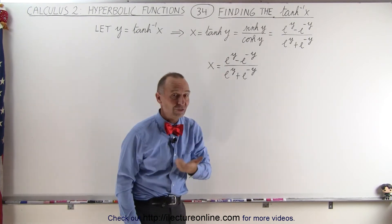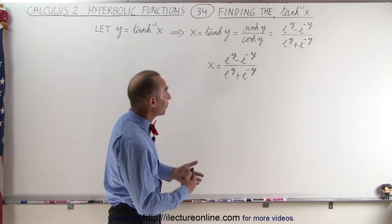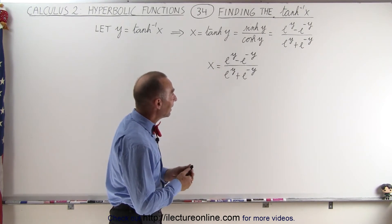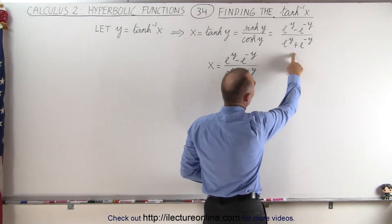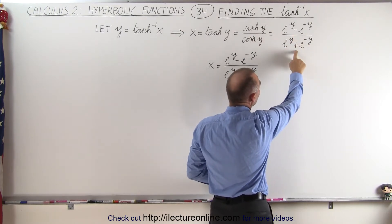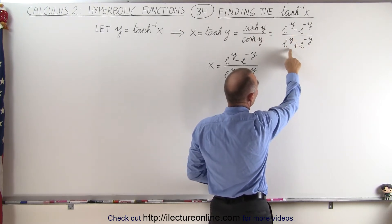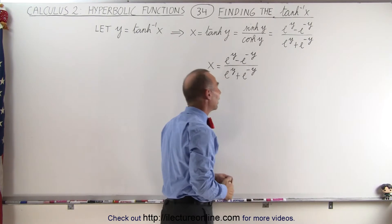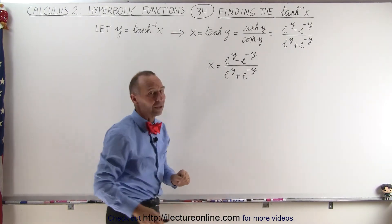The hyperbolic tangent is defined as the hyperbolic sine over the hyperbolic cosine, same as for the regular trig functions. When we write it in its basic exponential form, it becomes e to the y minus e to the negative y, divided by e to the y plus e to the negative y. So x becomes equal to that.